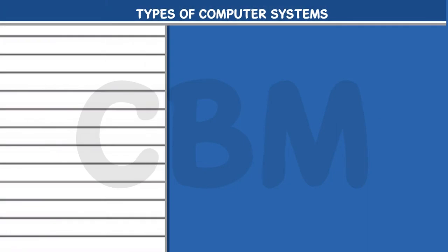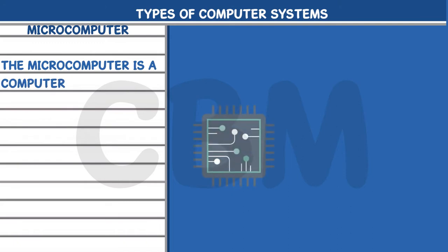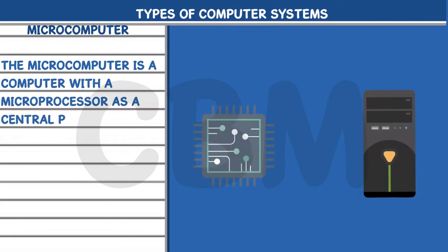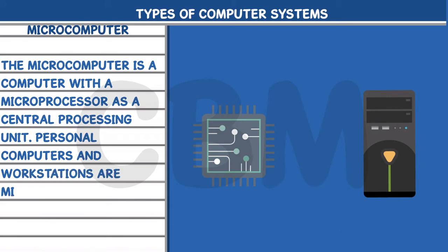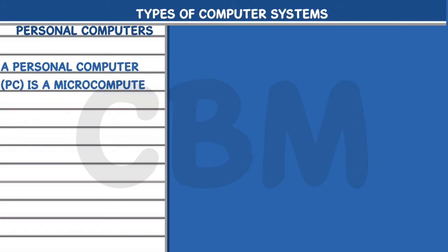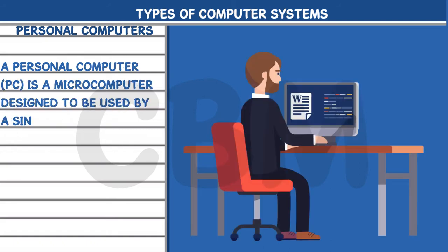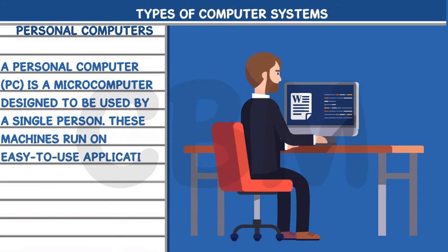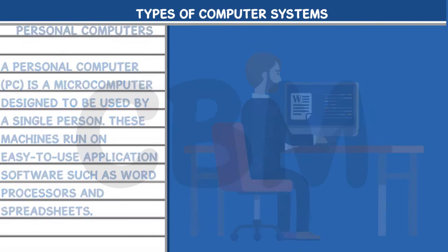Types of Computer Systems. Microcomputer: The microcomputer is a computer with a microprocessor as a central processing unit. Personal computers and workstations are microcomputers. A personal computer (PC) is a microcomputer designed to be used by a single person. These machines run on easy-to-use application software, such as word processors and spreadsheets.